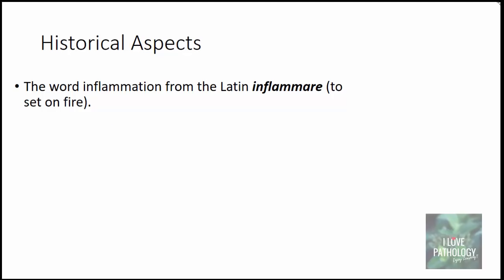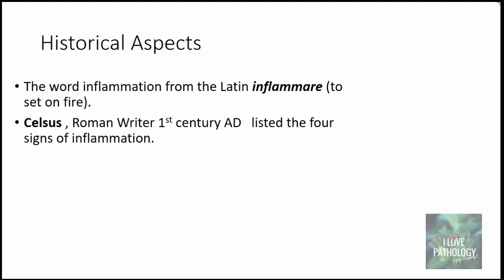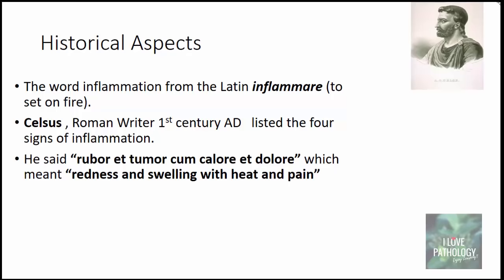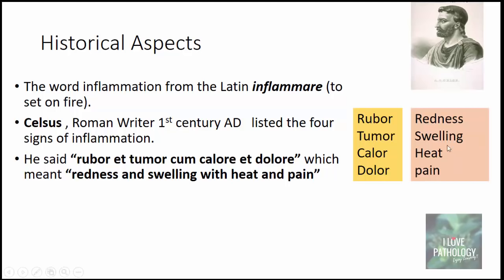The word inflammation is derived from the Latin 'inflammatio,' which means to set on fire. Celsus, a Roman writer in the first century AD, listed the four signs of inflammation, describing a typical inflammatory response as 'rubor et tumor cum calor et dolor,' which means redness and swelling with heat and pain. So the four cardinal signs are rubor, tumor, calor, and dolor.